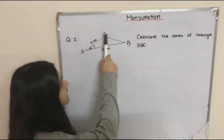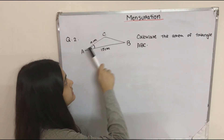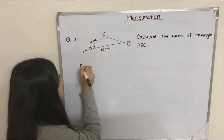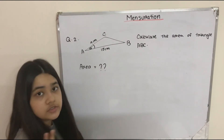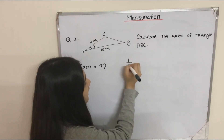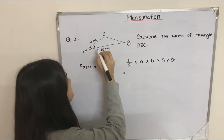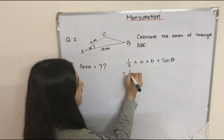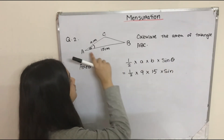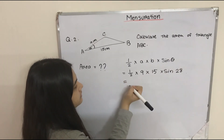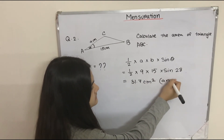In question number two, a triangle is given with two sides and one included angle, and it says calculate the area of triangle ABC. Here we have two sides and an included angle, so we use the formula half into a into b into sin theta. So: half × 9 × 15 × sin 28° = 31.7 centimeters squared, and this is our answer.